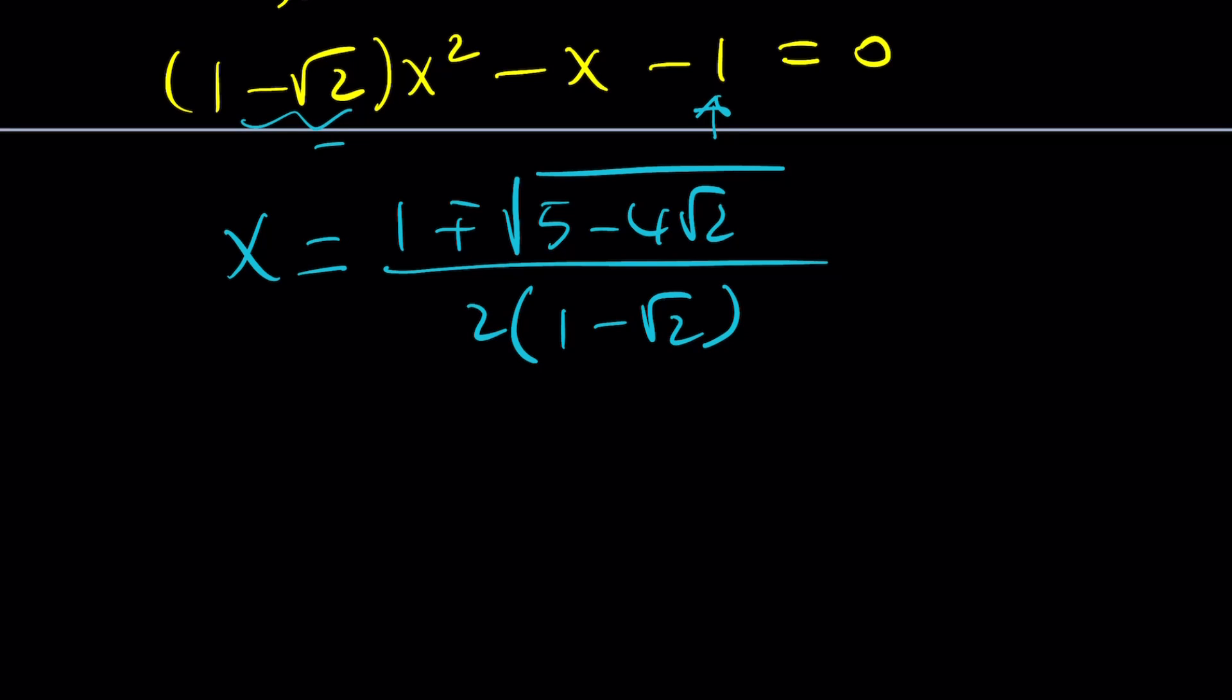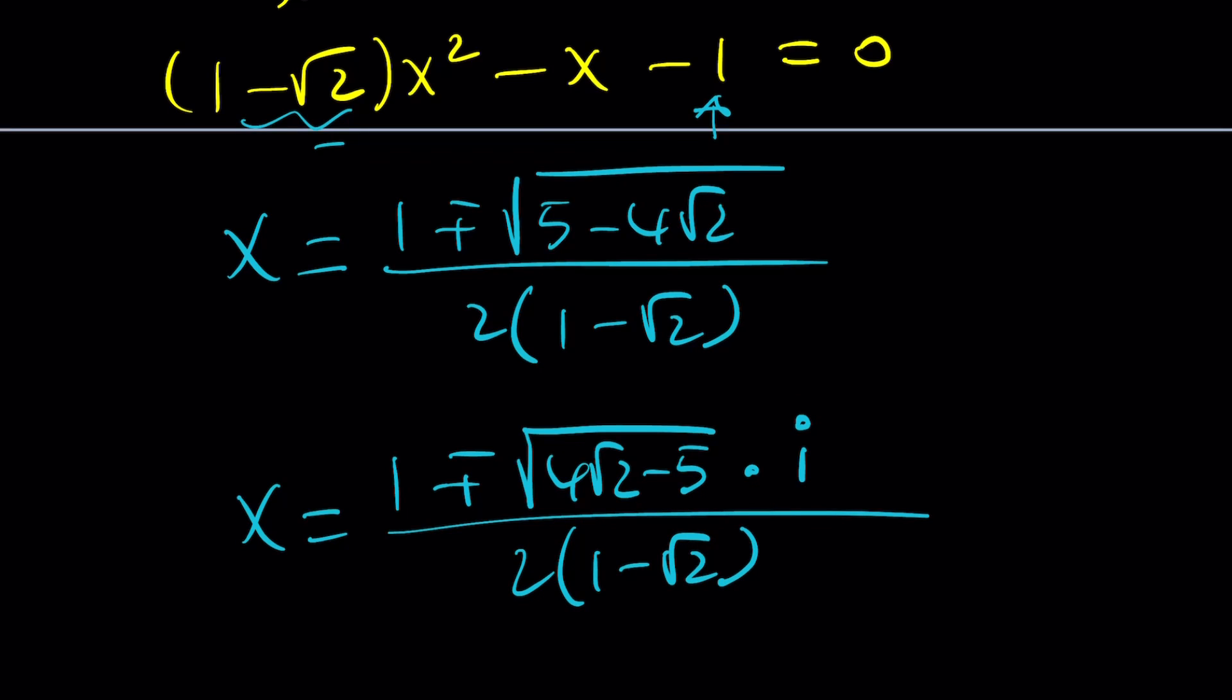But notice that 5 is less than 4 root 2. Why? Because 5 squared is 25, and 4 root 2 squared is 16 times 2, which is 32. So the difference is negative. Make sense? So we can write this as 1 plus minus the square root of 4 root 2 minus 5, which is now positive, multiplied by i, our imaginary number. And this is going to be the solution. Those are complex. The other ones are real.